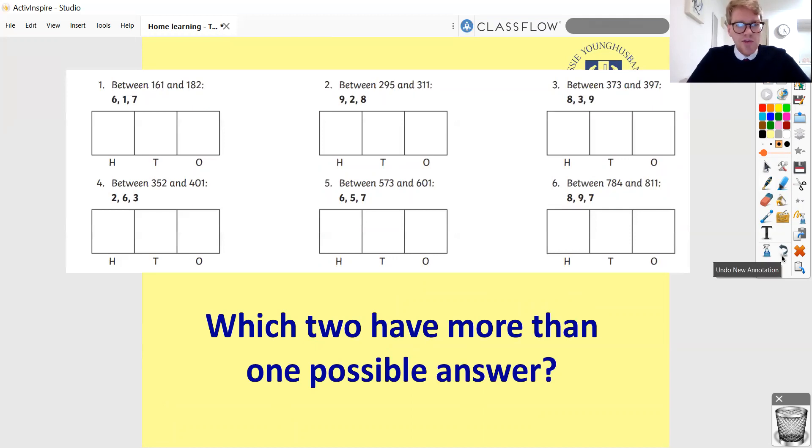Okay, bit of problem solving for you now. And you've got six questions here. And each one has three digits and three columns, hundreds, tens, and ones. And you need to place the digits in the right order to fit the criteria for each question. I'll show you what I mean for the first one. So, it says, you need to create a number that is between 161 and 182 using the digits 6, 1, and 7. So, you can put that 6, 1, and 7 in any order you want as long as you're creating a number between 161 and 182. Now, there's a little bonus problem solving for you here. Which questions here have more than one possible answer? Pause that video and give that a go. Then, see which ones you can come up with.